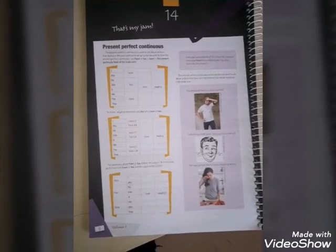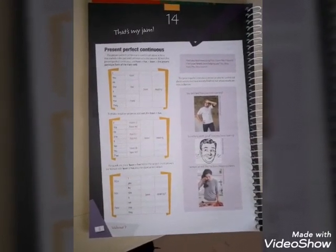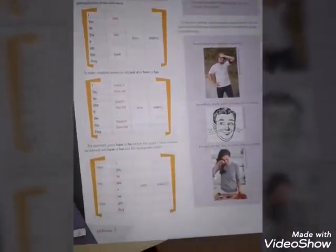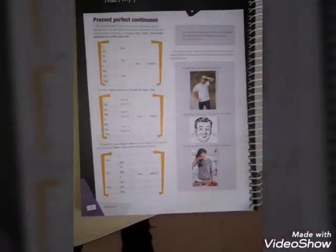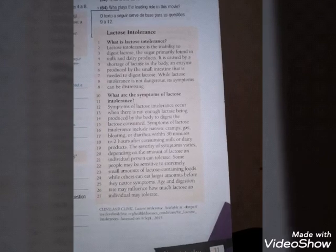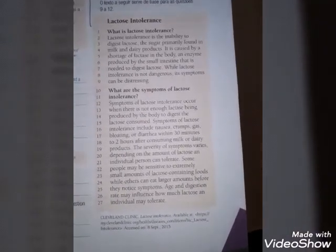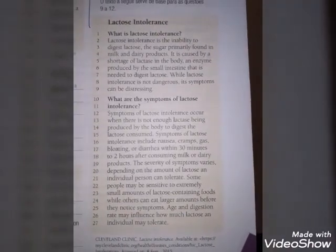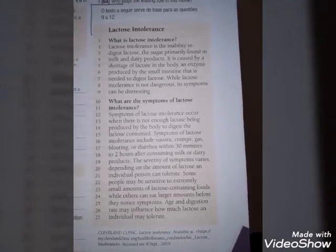Revendo isso tudo no nosso caderno de atividades, página número 8: estrutura afirmativa, estrutura negativa, estrutura interrogativa. A atividade de hoje é na página número 11. Vocês vão responder na página número 12. Dá uma olhada no texto: Lactose Intolerance — intolerante à lactose. Estão perguntando o que é ser intolerante à lactose e quais são os sintomas de pessoas que são assim. Lê o texto da página 11 e pula para a 12.